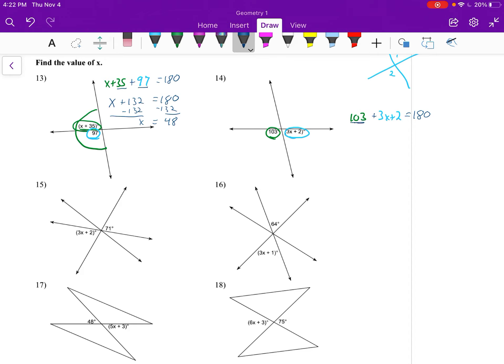So we have 103, we're going to add the 3x plus 2, and that has to equal 180. Once again we're doing a little bit of algebra to solve this. The 103 plus the 2 is 105 plus 3x equals 180. We would subtract 105 from both sides and we get 3x equals 75.